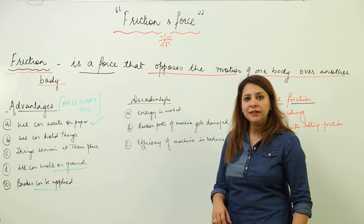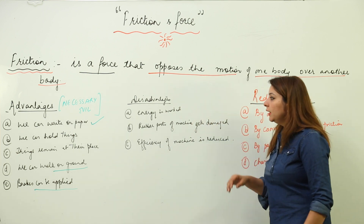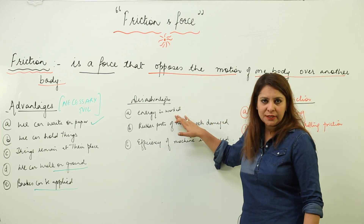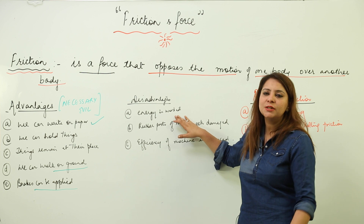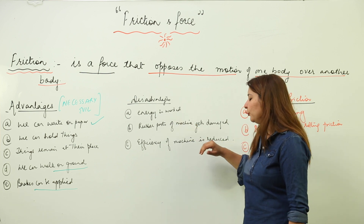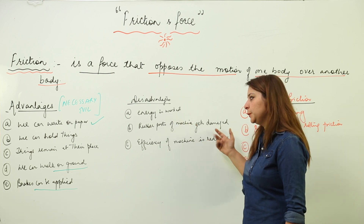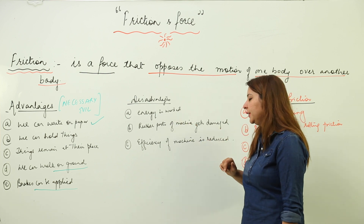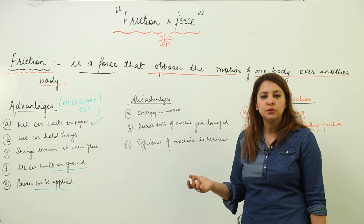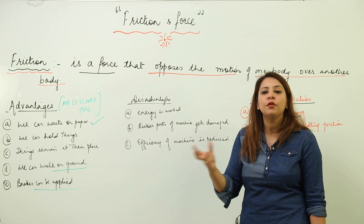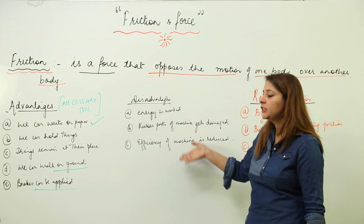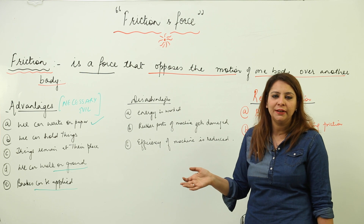There are disadvantages as well. Most of the energy is wasted in overcoming friction. Rubber parts may get damaged. The efficiency of machines gets reduced, which is why machines often get choked up. These are all disadvantages of friction.